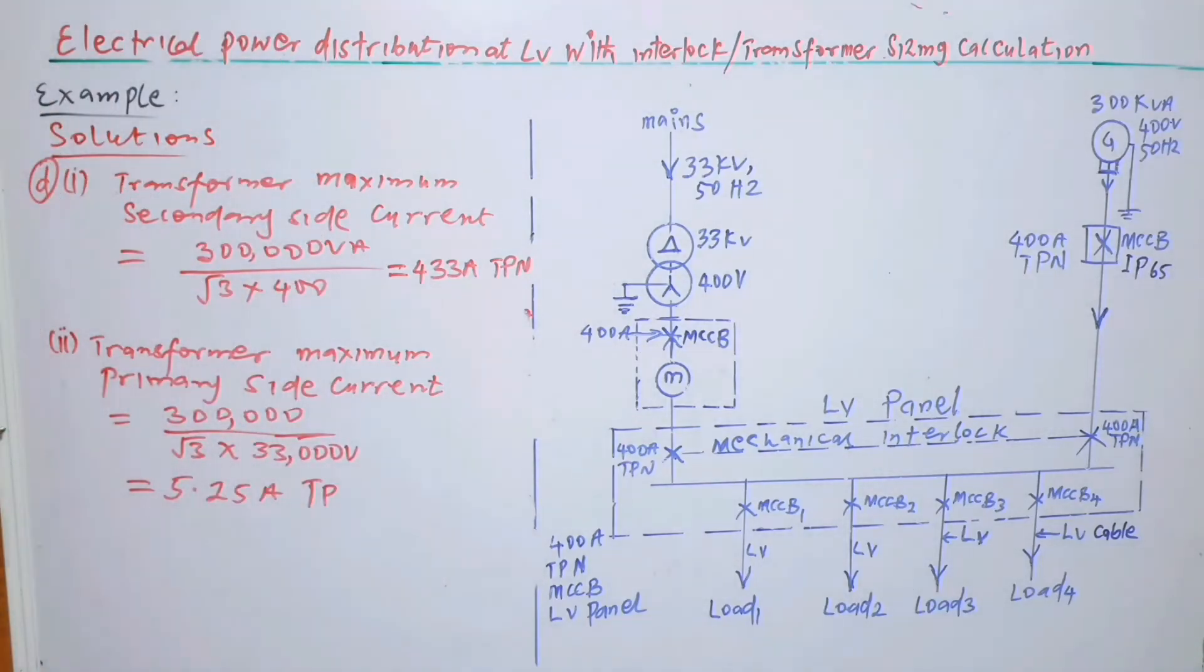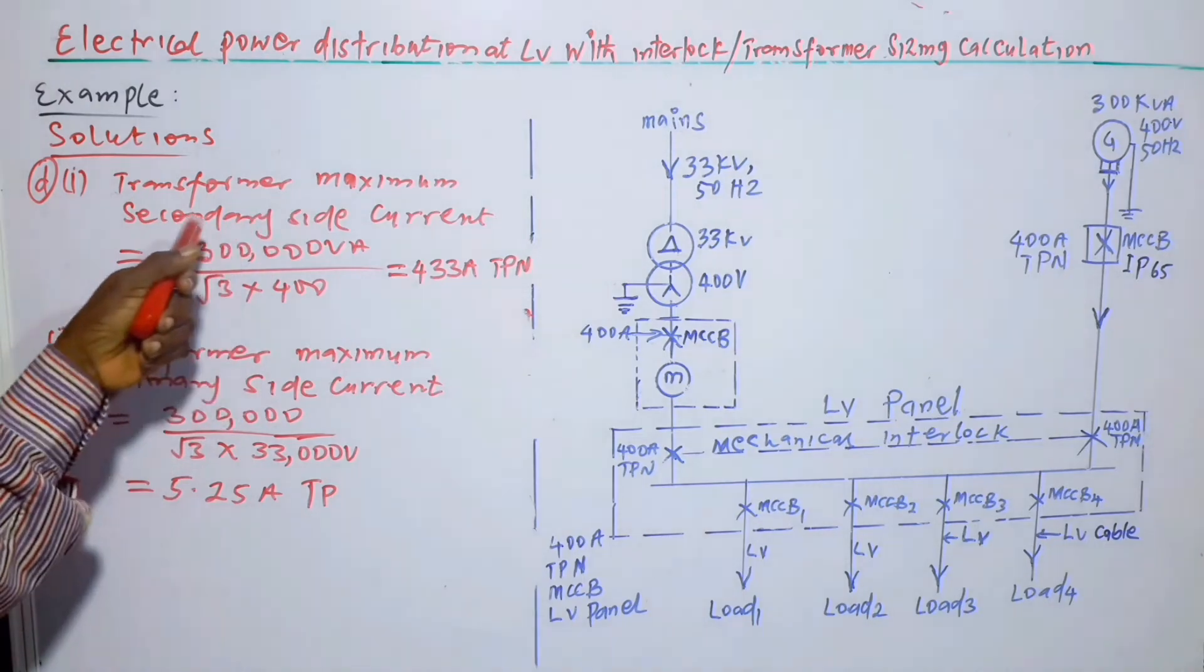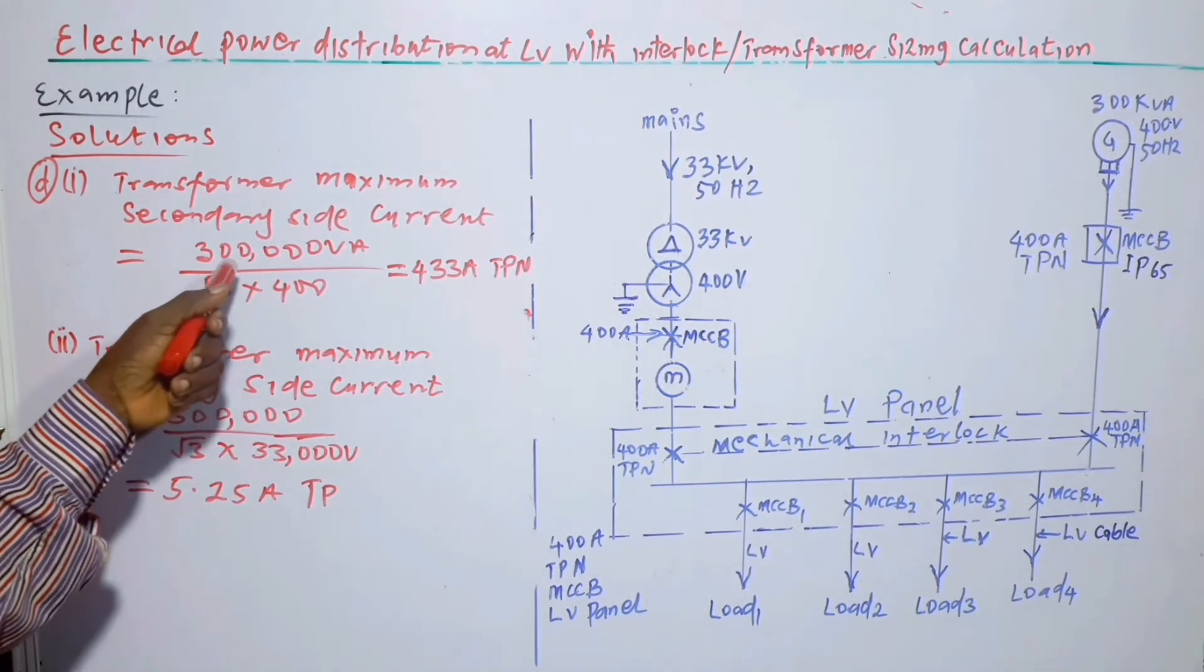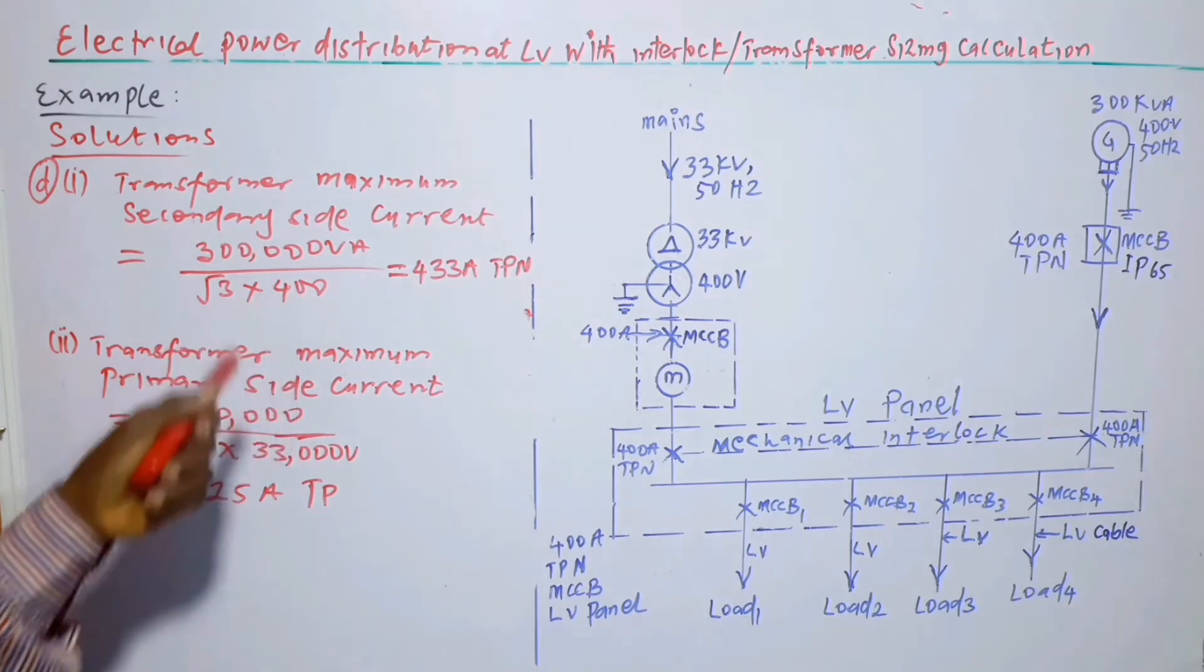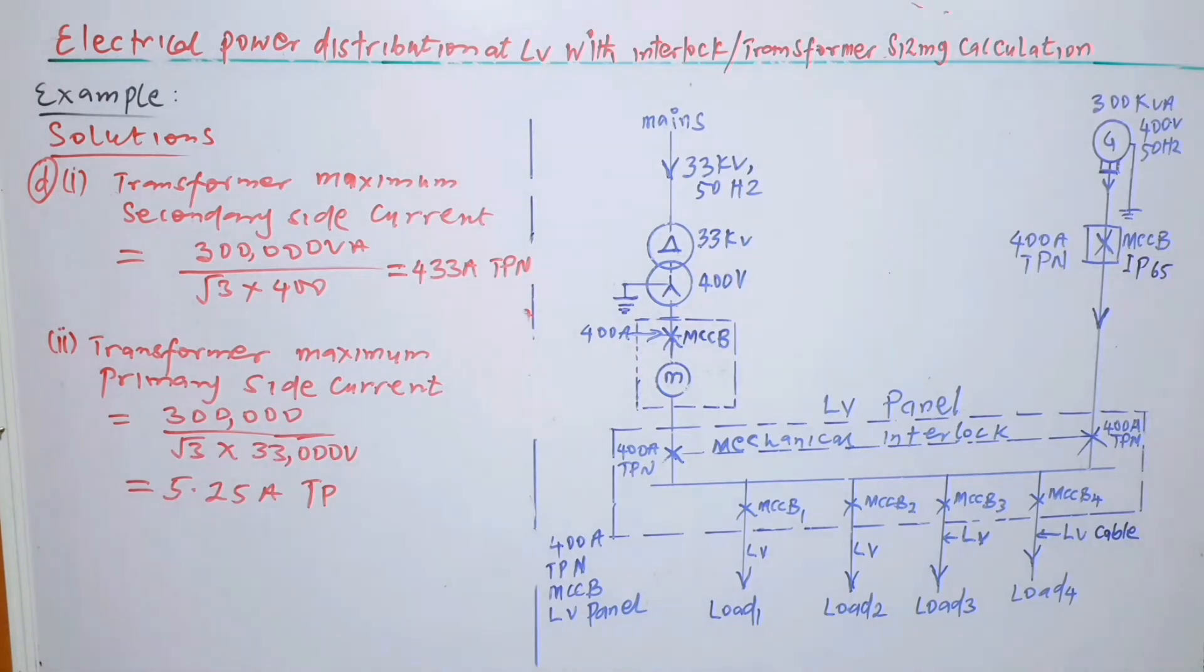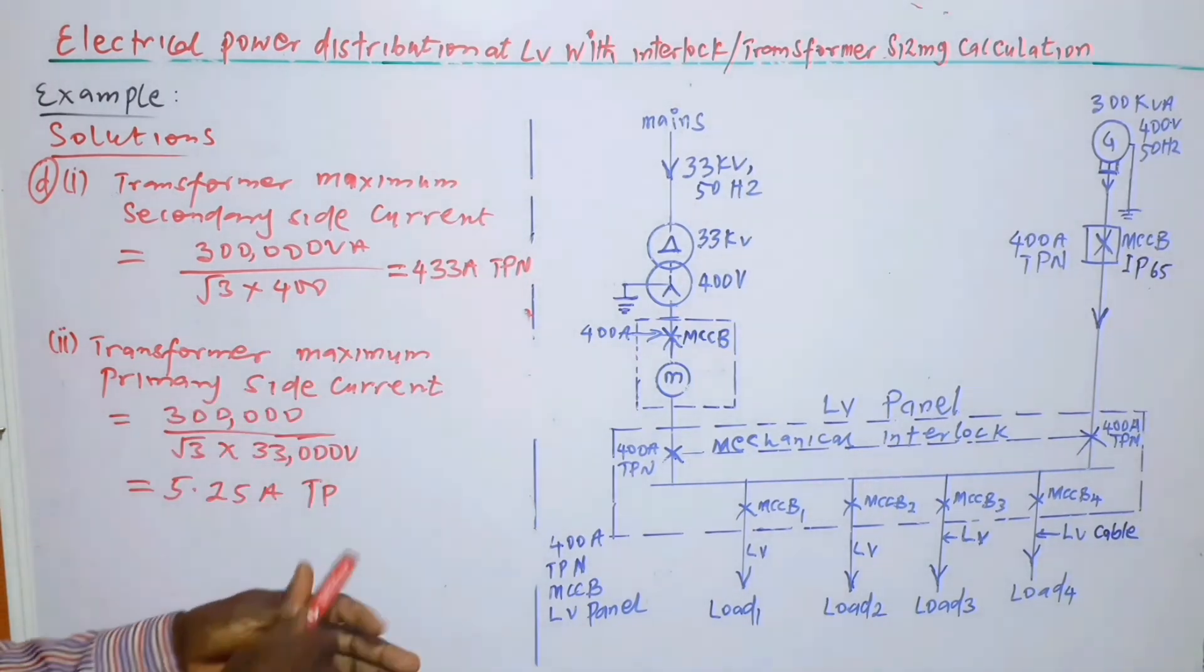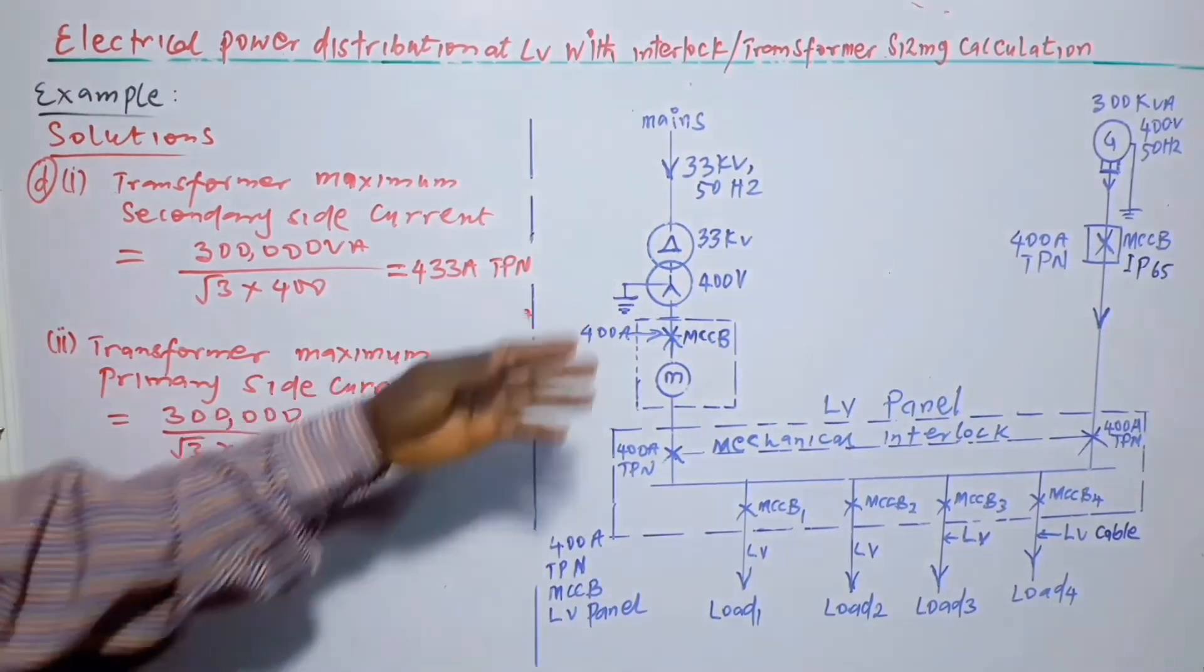One can move a step further by having part D. So part D1: transformer maximum secondary side current is equal to 300,000 VA divided by root 3 times 400, and the answer is 433 ampere. So we are talking of this star side, the secondary side.